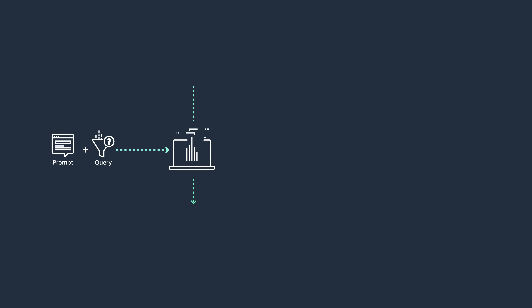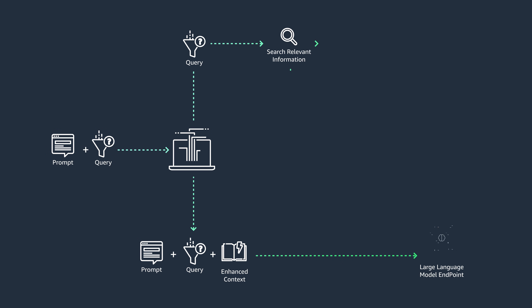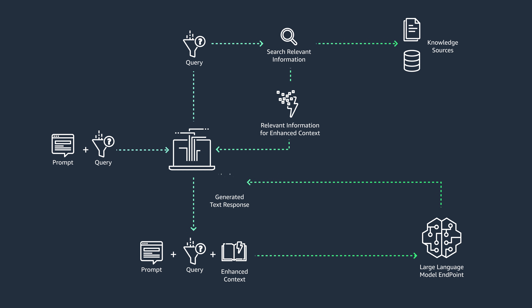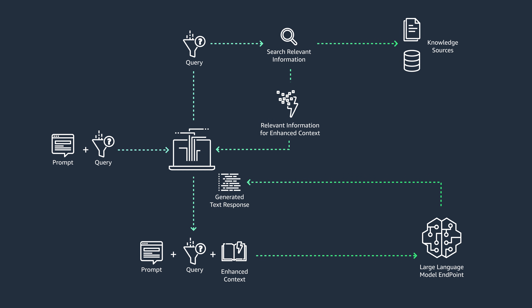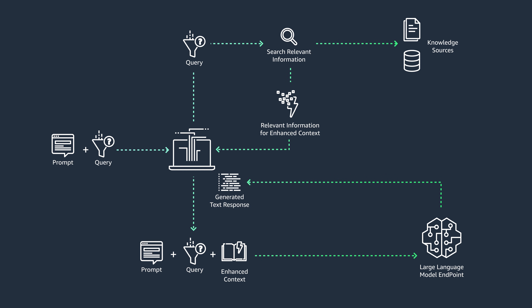Such an approach is more suitable compared to out-of-the-box LLMs, which may lack your enterprise-specific knowledge. Retrieval augmented generation helps to retrieve data from outside a foundation model and augment your prompts — natural language text that requests the LLM to perform a specific task — by adding the relevant retrieved data in context.